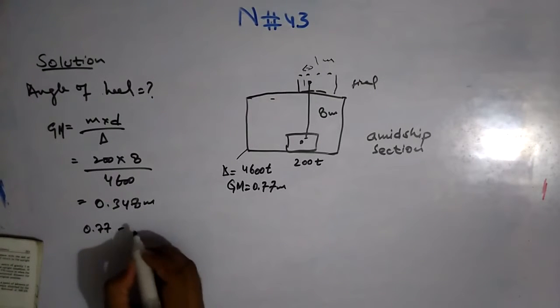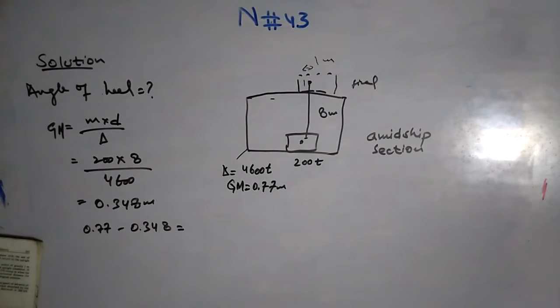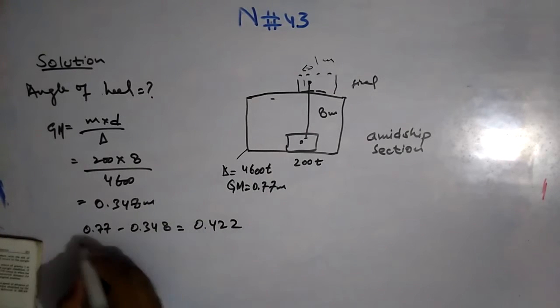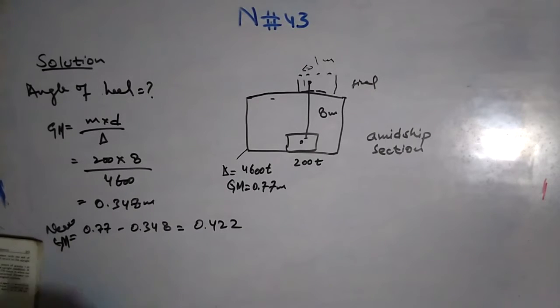Now as we have GM which is 0.77, so after moving this mass, the GM becomes 0.77 minus 0.348. The new GM is 0.422 meters.